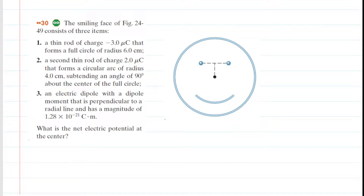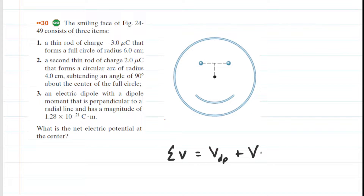You might want to pause the video and reread the descriptions of the three charge distributions creating electric potential at the center of this circle. We're going to consider each set of charge distributions in turn, then add up the total electric potentials. The total electric potential is going to be the potential produced by the dipole — the eyes of the smiley face — plus the potential produced by the smile, plus the potential produced by the circular head. Because electric potential is scalar, we can just add up the individual potentials.